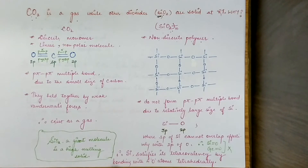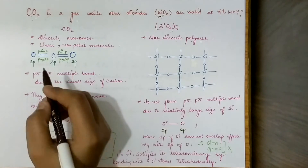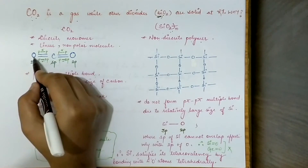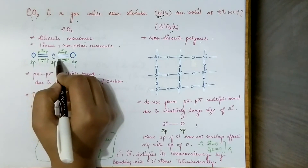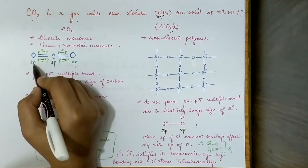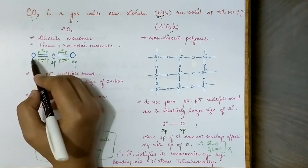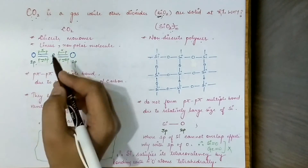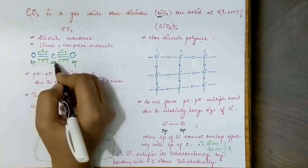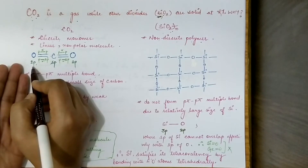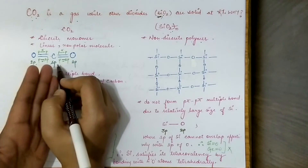The difference is because of the p-pi p-pi multiple bond. If you look at the carbon and oxygen atoms in CO₂, you will see that the carbon atom is sp hybridized and the oxygen is 2p. The orbitals taking part in bonding — this double bond — are basically the sp hybridized orbital of carbon and the 2p orbital of oxygen.